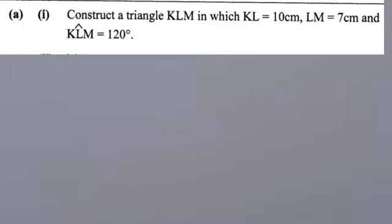The first question says: construct a triangle KLM in which KL is equal to 10 centimeters, LM is 7 centimeters, and angle KLM is 120 degrees.